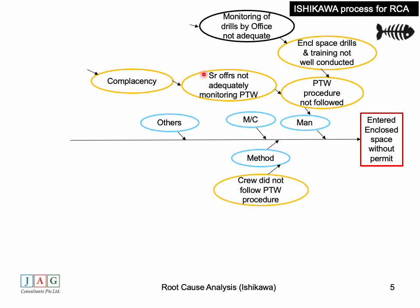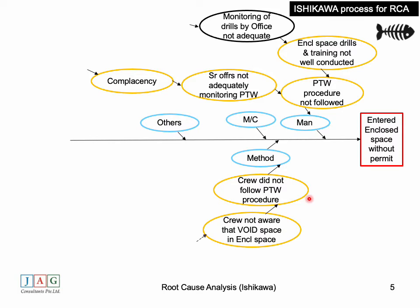Looking at 'method' — the procedures: complacency meant crew did not follow the permit to work procedure. Why? The crew was not aware that a void space is an enclosed space. Additionally, monitoring of the permit to work process by the office was not adequate, which also contributed to this issue.